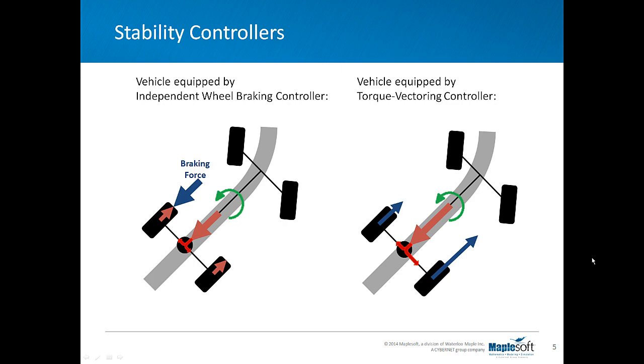But while these vehicles follow the curved path, the controllers try to keep vehicles on the desired paths. On the left, the independent wheel braking system reduces the driving torque transferred to the wheels and applies the brake force to either inner or outer wheel for understeer or oversteer conditions. However on the right, the torque vectoring system doesn't decrease the magnitude of the driving torque and it only changes the ratio between left and right.